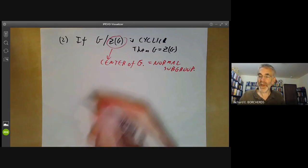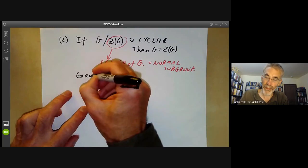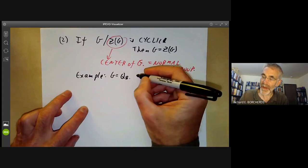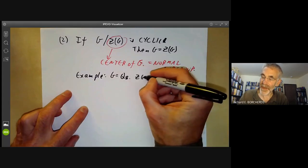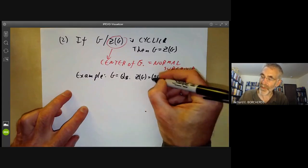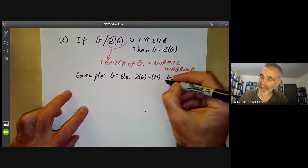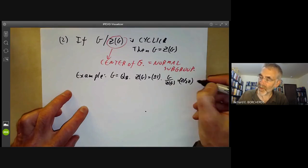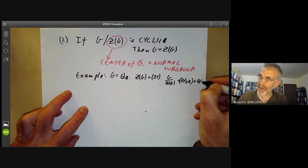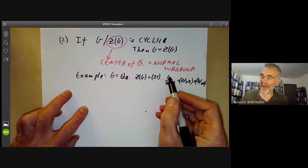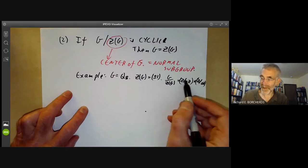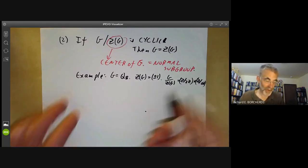Of course, there are plenty of cases where G modulo its centre is not cyclic. So for example, suppose G is the quaternion group of order 8. Then you remember the centre of G consists of two elements plus or minus 1. And G modulo the centre of G is just a product of two groups of order 2. So here G modulo the centre of G is not cyclic and it's not trivial. It's a product of other groups.